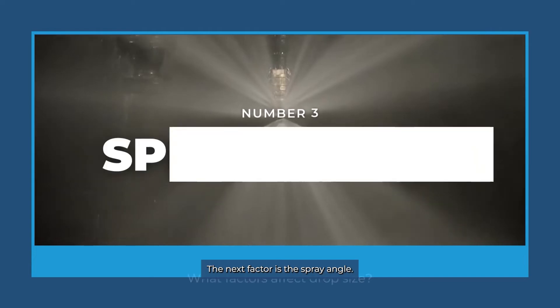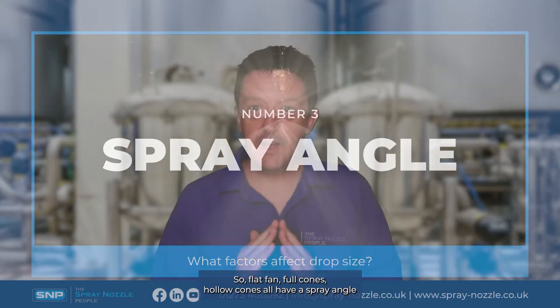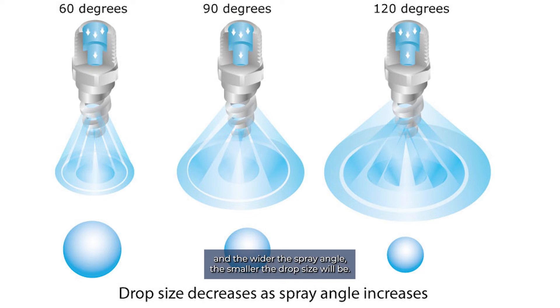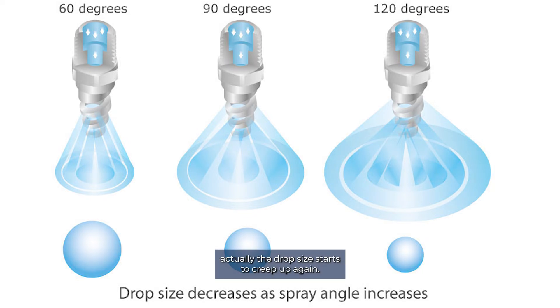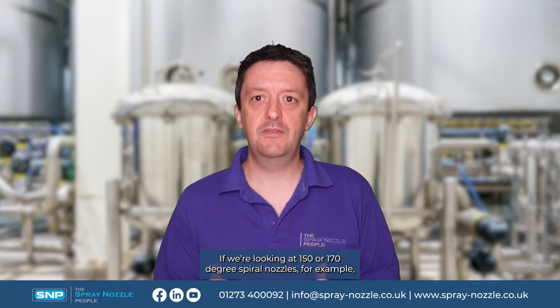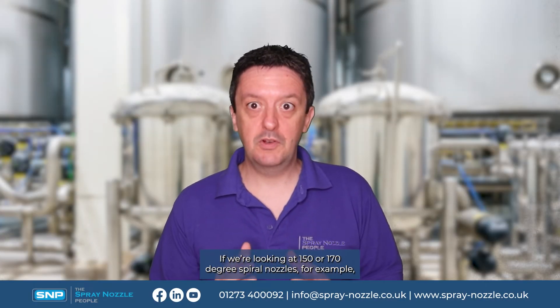The next factor is the spray angle. Flat fan, full cone, and hollow cone nozzles all have a spray angle, and the wider the spray angle, the smaller the drop size. However, there's a slight quirk: at very wide spray angles, the drop size actually starts to creep back up. For example, 150 or 170 degree spiral nozzles will have a bigger drop size than 90 degree nozzles of the same type.